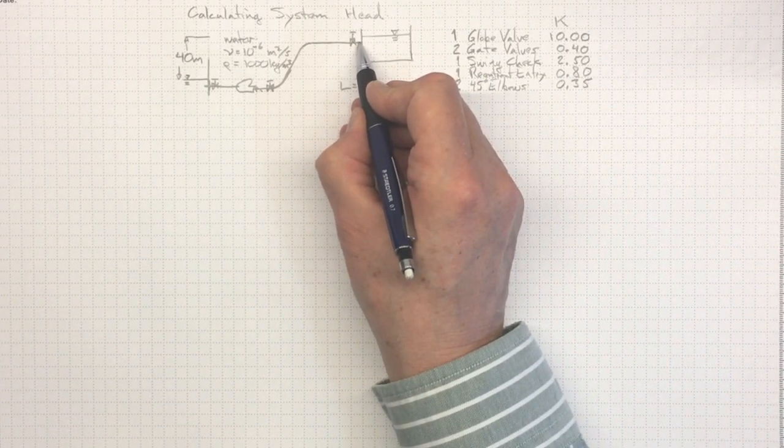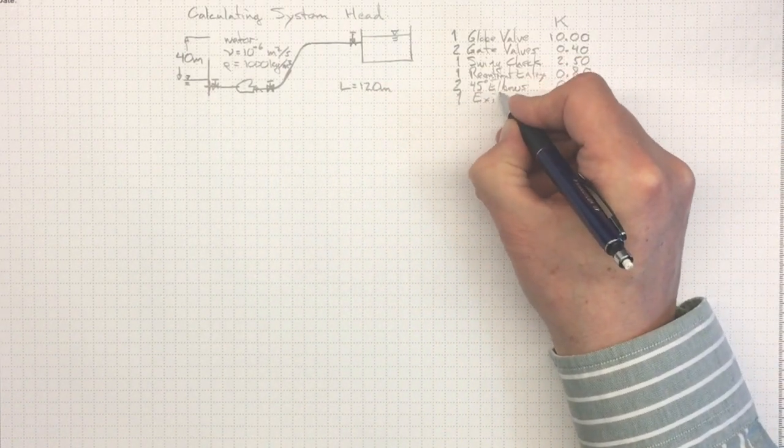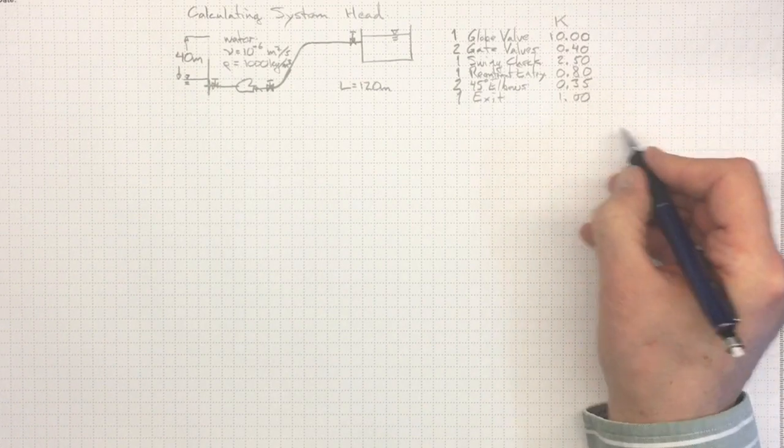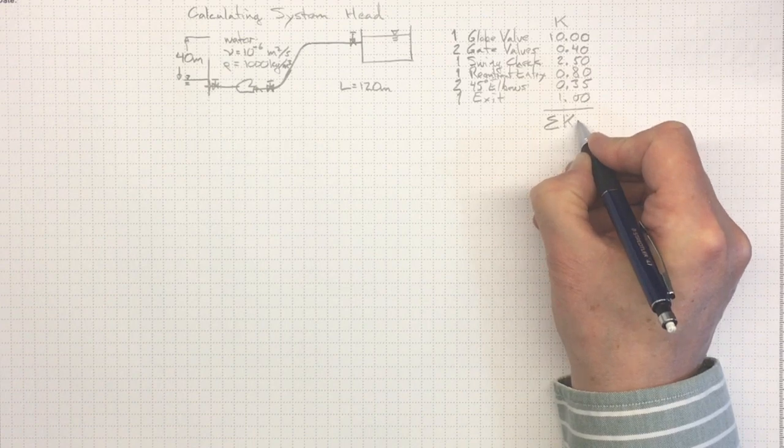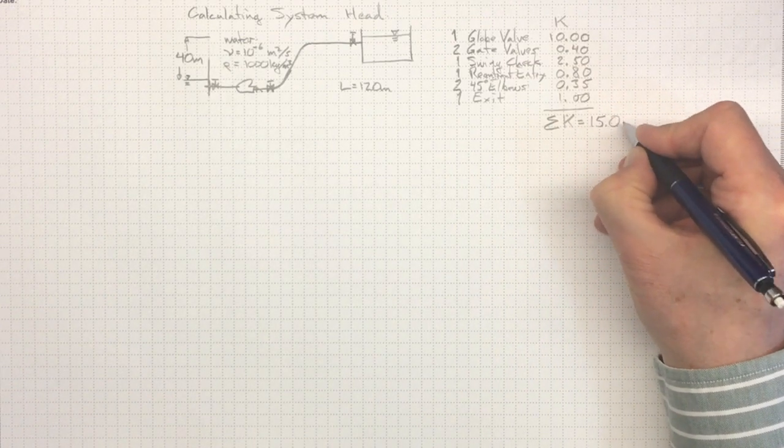Finally, the exit up here, we lose all of the kinetic energy, so the K factor is equal to 1 for an exit, no matter what shape the exit profile is. And if I sum all of those up, I wind up with about 15.0.